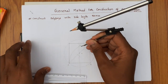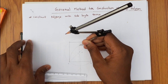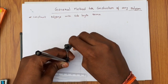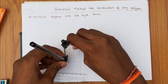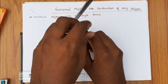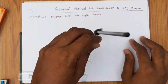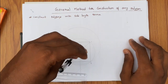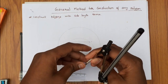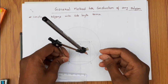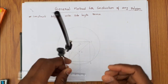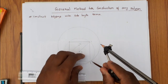Similarly, with 6 as center and 6A as radius, draw a semicircle. Now cut this semicircle with AB radius.